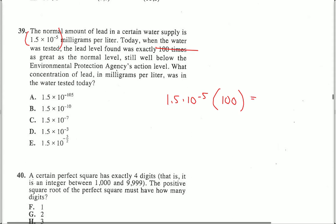100 is the same as 10 to the 2 power. 1.5 times 10 to the negative 5 power times 10 to the 2 power means I add the exponents here. 1.5 times 10 to the negative 3.